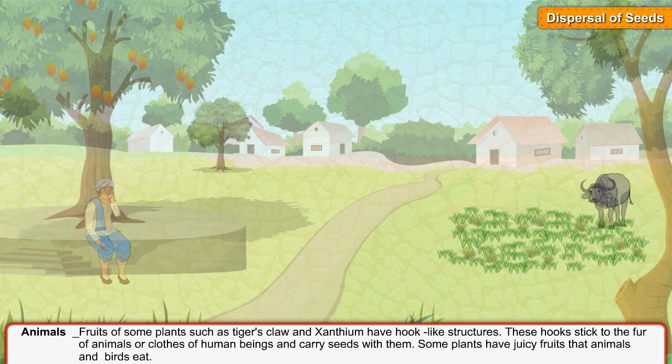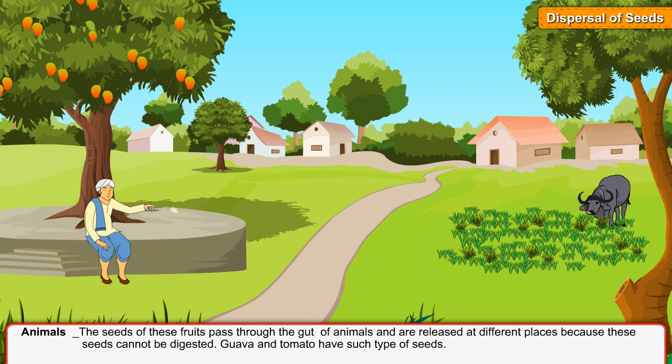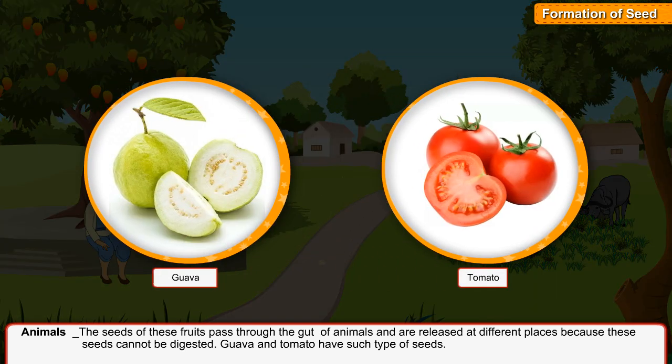Some plants have juicy fruits that animals and birds eat. The seeds of these fruits pass through the gut of animals and are released at different places, because these seeds cannot be digested. Guava and tomato have such type of seeds.